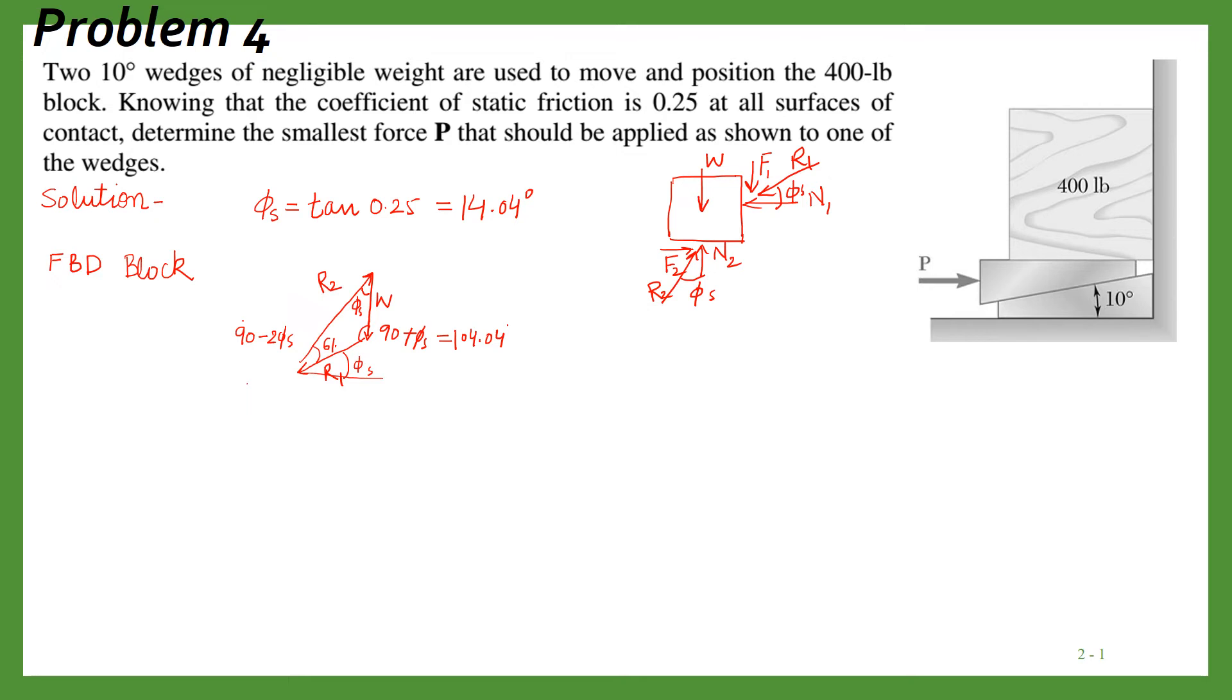Now we can apply sine law. By using sine law, we can have W upon sine of 61.92, and then we can have R2 upon sine of 104.04 degrees. From that you can calculate R2, and it comes out to be 439.8 pounds.